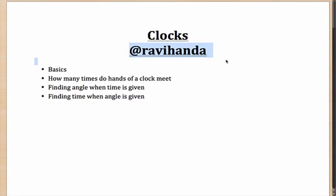In this particular session, we'll talk about some of the basics related to clocks. We'll also discuss how many times the hands of a clock — the minute hand and the hour hand — meet. We'll find out methods to calculate the angle when the time is given, and also the other way around: finding the time when the angle is given, such as 20 degrees, 30 degrees, or any degree.